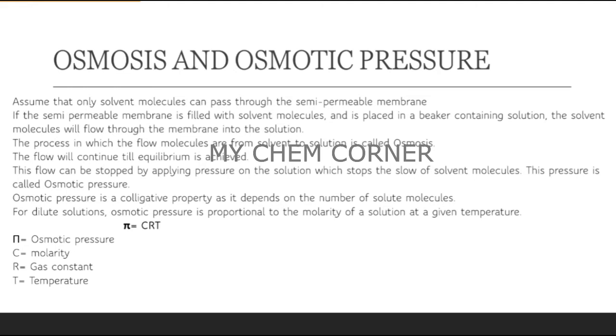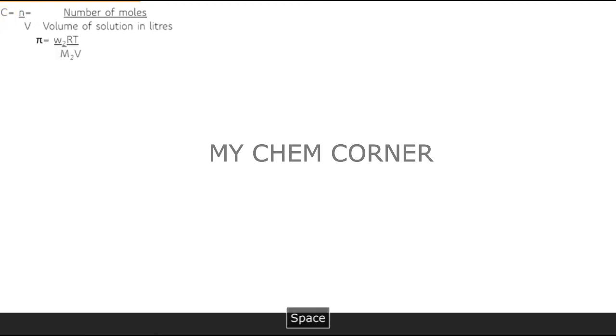For dilute solutions, osmotic pressure is directly proportional to the molarity of the solution. The osmotic pressure, symbol pi, equals CRT, where C is molarity, R is the gas constant, and T is temperature. To calculate problems, concentration (molarity) equals number of moles of solute divided by volume of solution in liters. Substituting, number of moles of solute is W2 divided by M2, divided by volume V. This expanded equation is used for further calculation of problems related to osmosis.